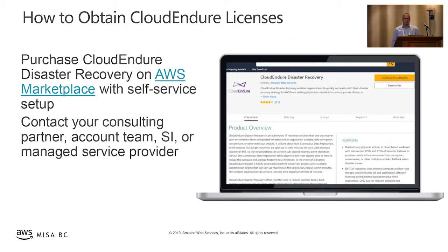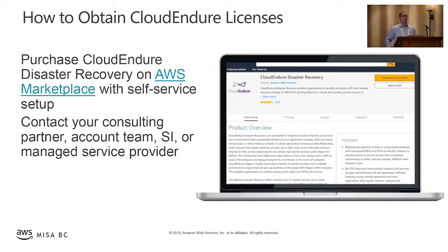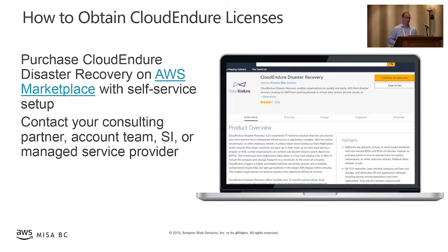How do you obtain CloudEndure licenses? We have something called the AWS Marketplace — an online store, a curated software platform where you can browse various products. Searching for CloudEndure will reveal a disaster recovery listing where you can create a subscription in your AWS account to protect the number of virtual machines you want. It's license-based — you get a license for the virtual machines you want to protect, and you can instantly start protecting them.